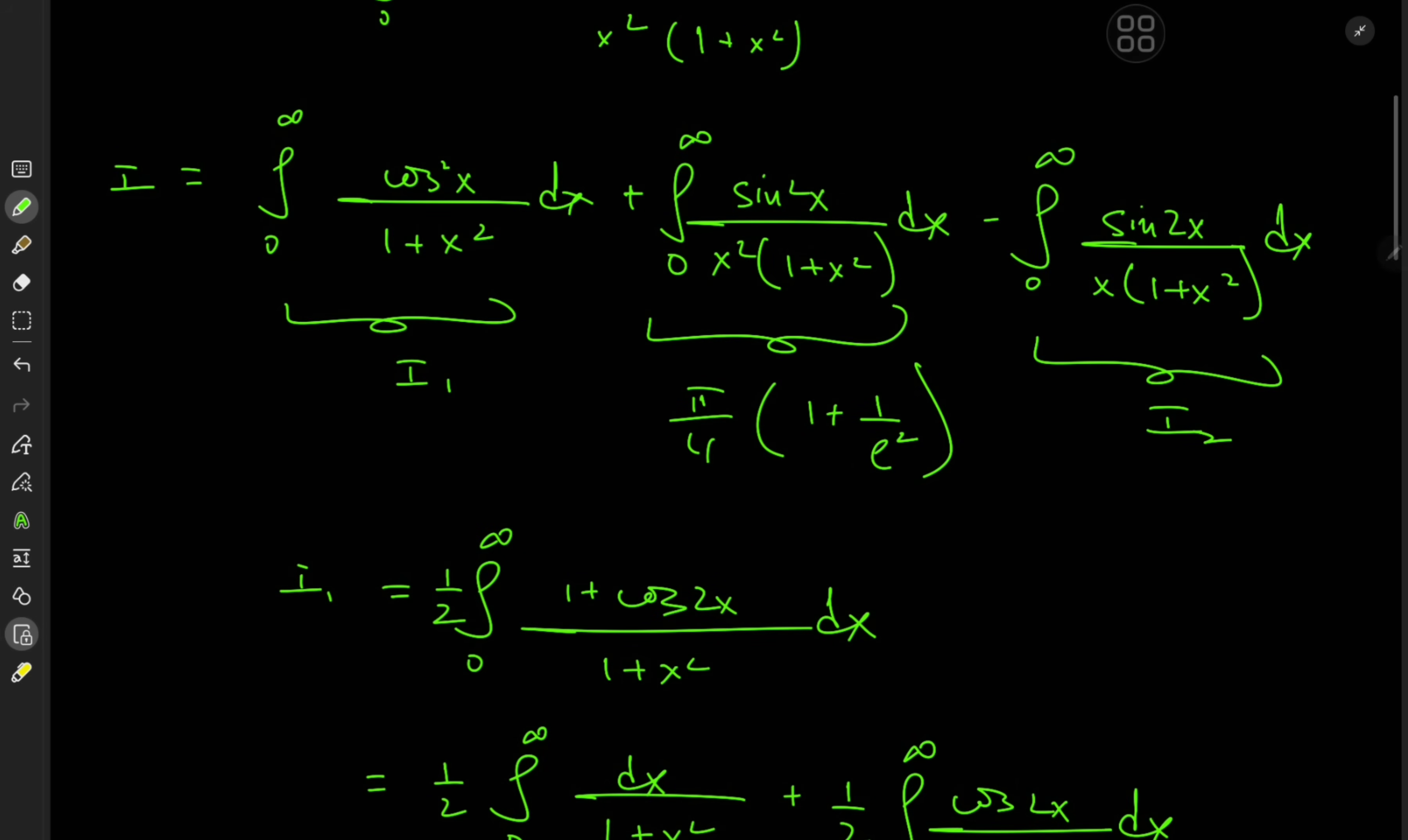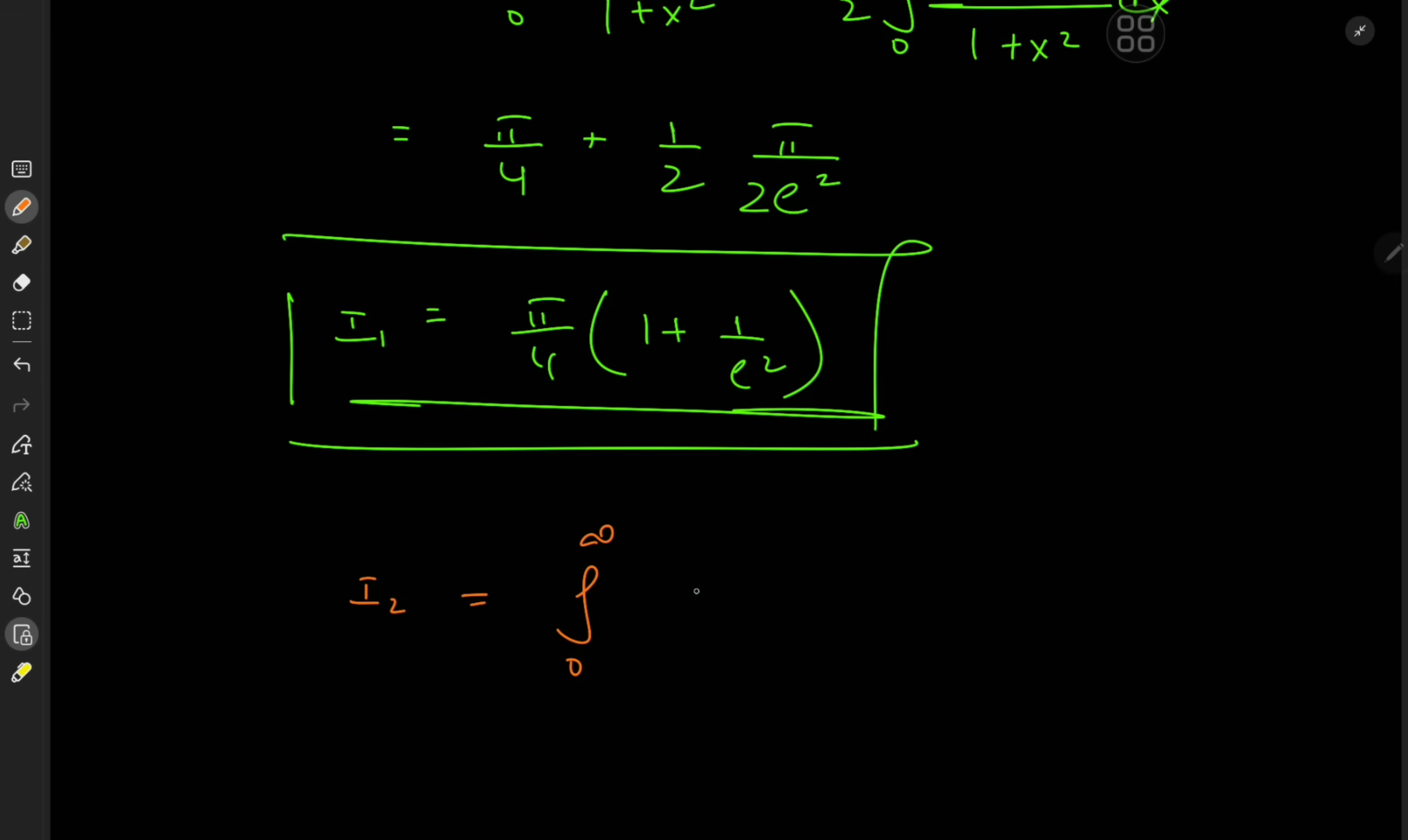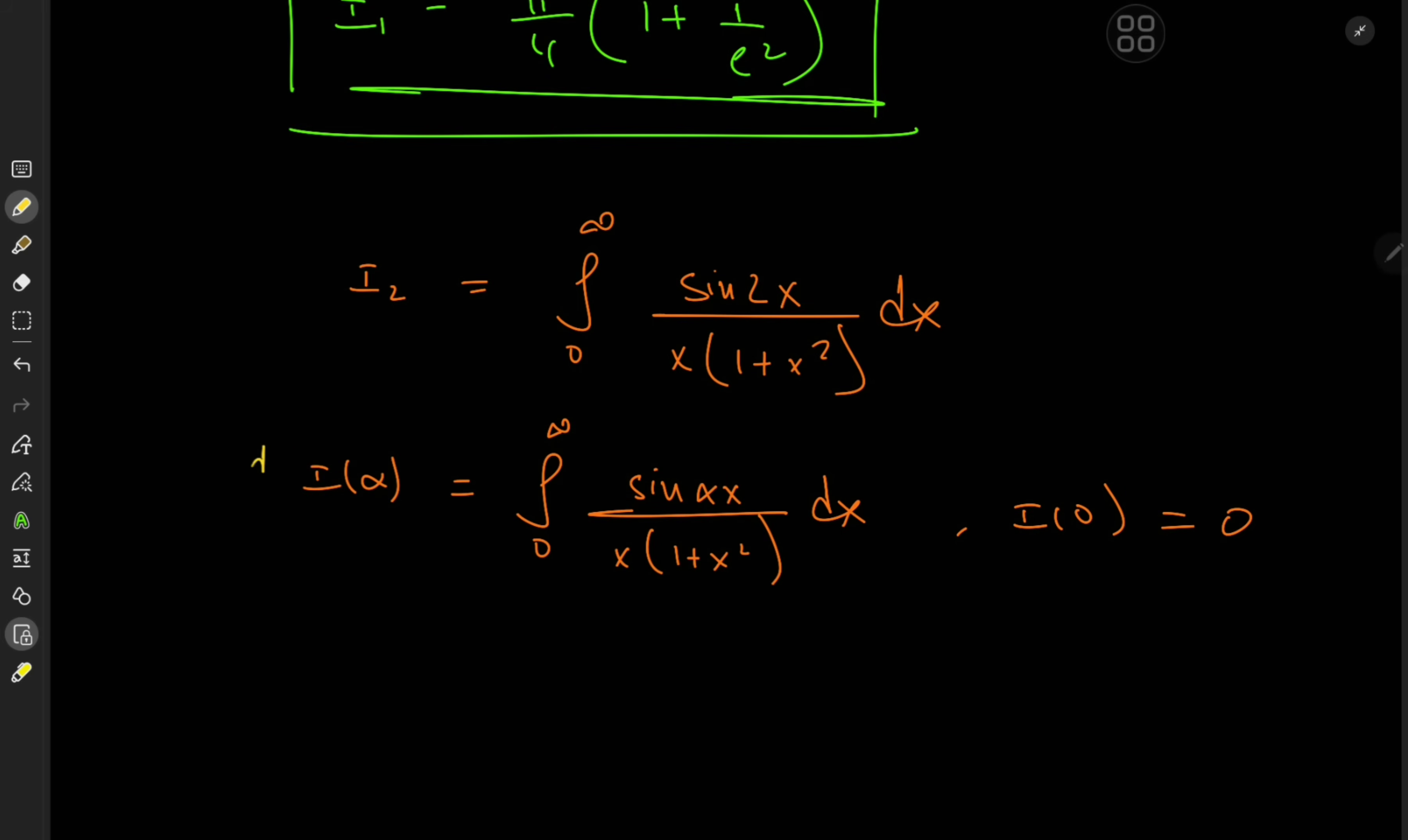So what about the last integral that's i sub 2, so i sub 2 is defined as the integral from 0 to infinity sin 2x over x times 1 plus x squared dx and we could invoke a quick differentiation under the integral sign approach here and define the integral function i of alpha to be the integral from 0 to infinity of sin of alpha x over x times 1 plus x squared dx so the target case would be alpha equal to 2 and a useful bit of information here is that i of 0 equals 0 because sine of 0 is 0 the integrand just collapses to 0 so i of 0 equals 0 is a useful initial value condition to know.